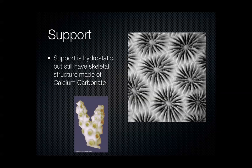When we talk about what supports the coral or sea anemone's body, it's hydrostatic, meaning fluid under pressure. But corals also have a skeletal structure made of calcium carbonate, which they produce from compounds in ocean water. Up close, the structure looks like what's pictured here — every one of those star-shaped openings is where a polyp would have come out when it was alive.